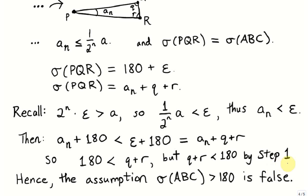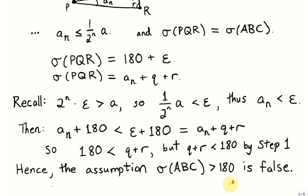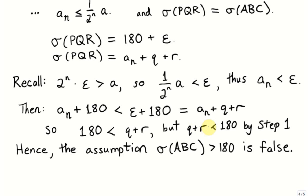Therefore, our original assumption that the angle sum of triangle ABC is greater than 180 degrees is false. Since the angle sum is not greater than 180 degrees, it must be less than or equal to 180 degrees. This completes the proof of the Saccheri-Legendre theorem.